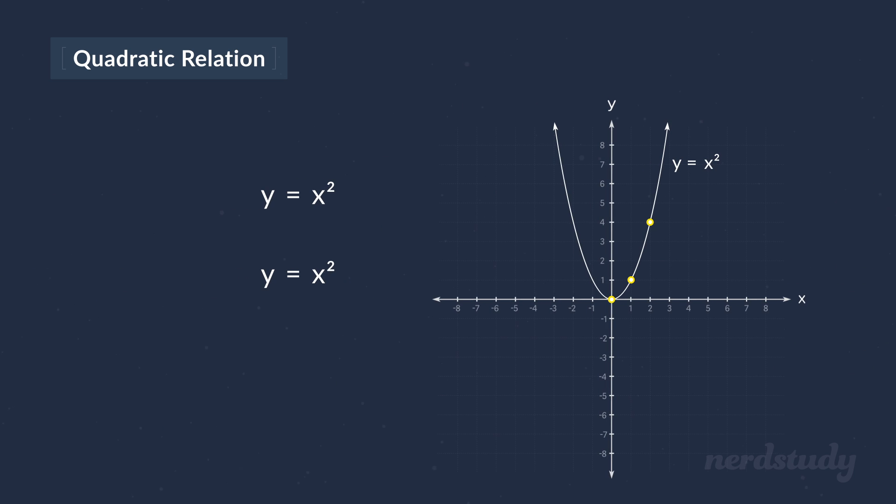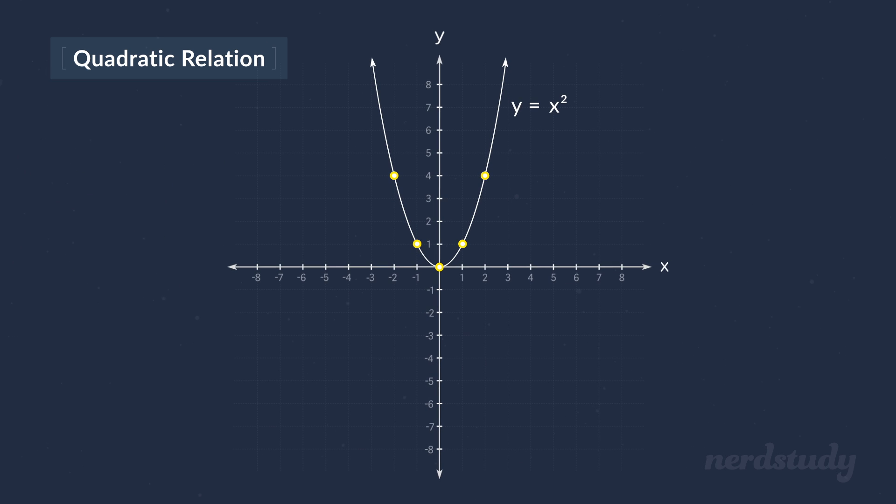And what about this side then? Well, if you plug in negative one for x, since it's going to be squared, what we would get is negative one multiplied by negative one, giving us one. If you plug in negative two, it would be negative two multiplied by negative two, giving us positive four. Notice how we plug in negative numbers and got the same value as plugging in the positive numbers.